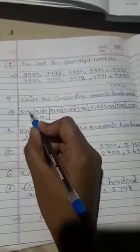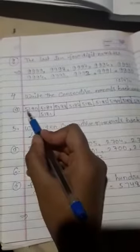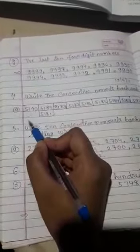Numerals mean look backward, the before number. Minus one. 5190 minus one is 5189.